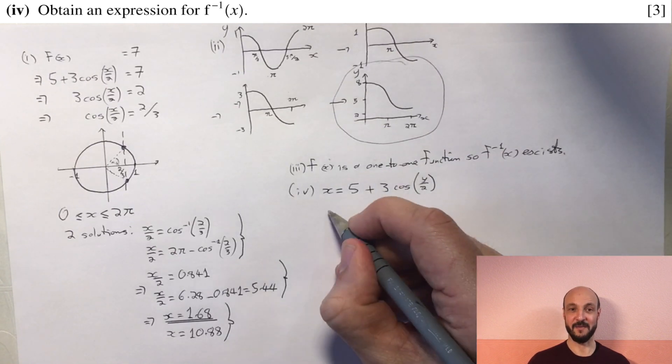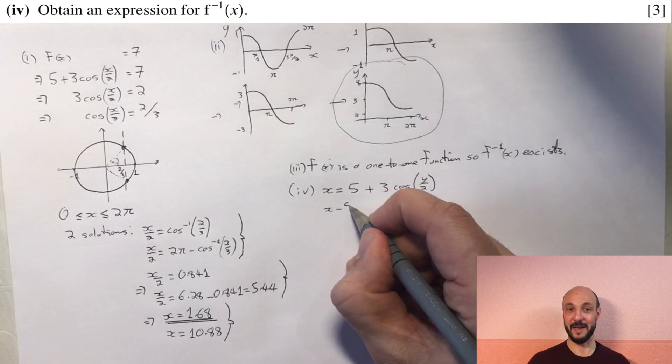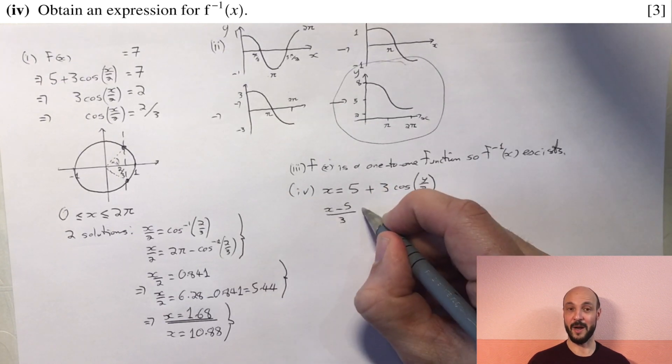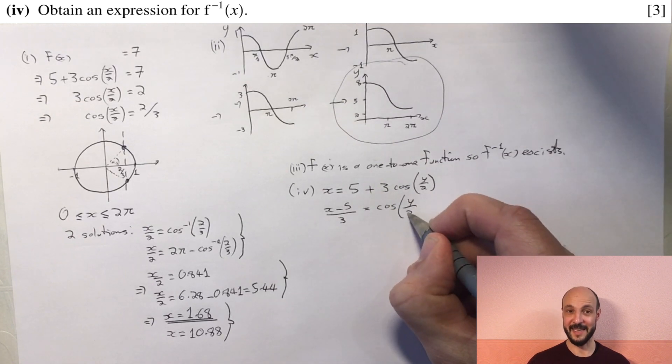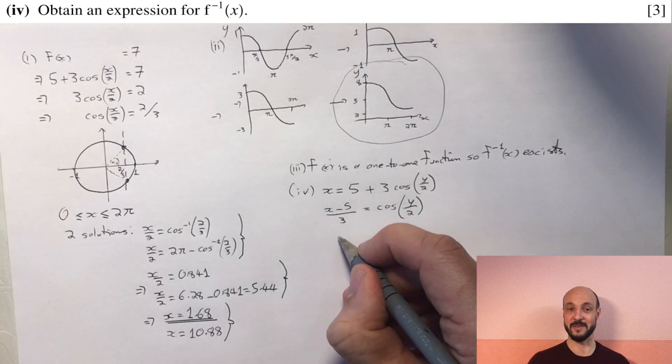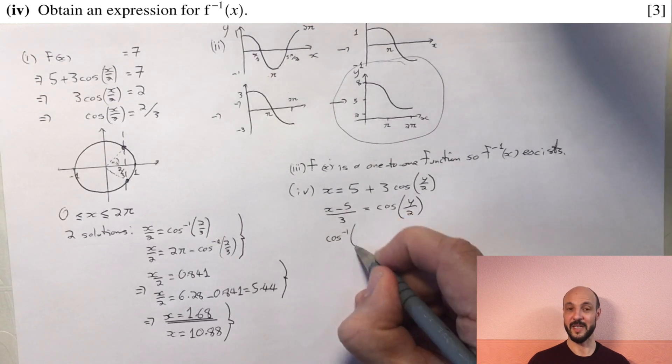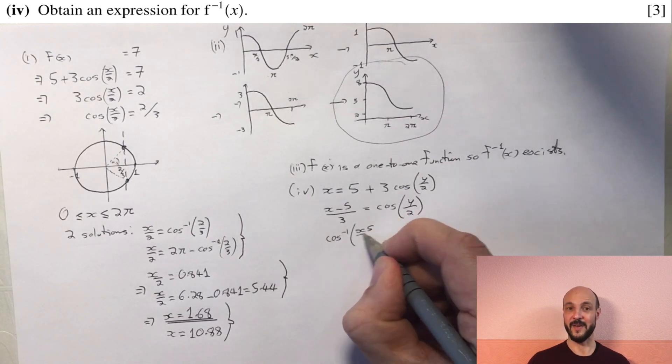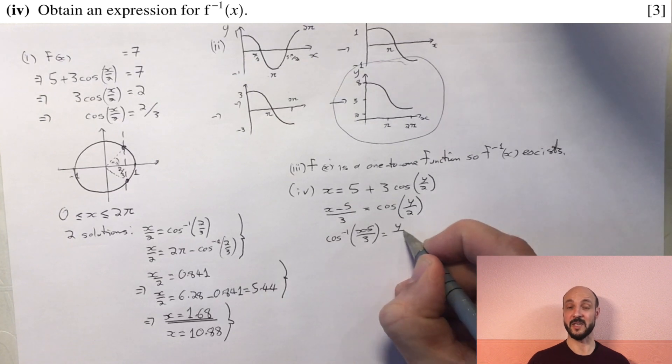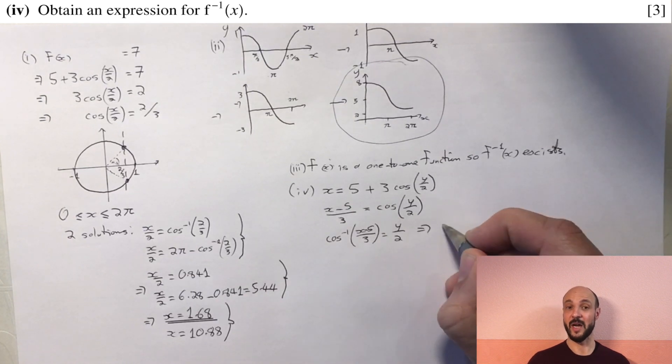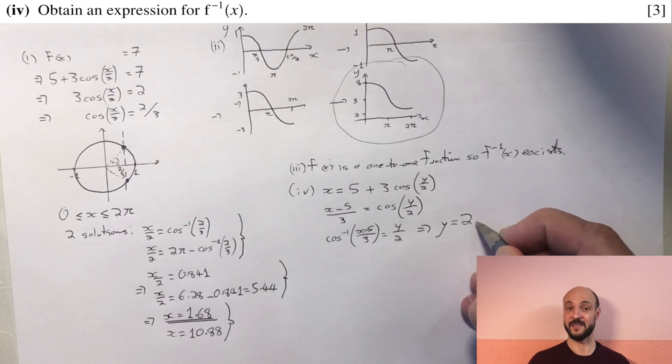So we rewrite the equation as x equals 5 plus 3 cosine of y over 2. We then subtract our 5 and divide it through by 3 to give cosine of y over 2 equals x minus 5 over 3. We then take the inverse cosine of both sides to give us y over 2 equals arc cosine of x minus 5 over 3. And then we multiply both sides by 2 to give y equals 2 arc cosine of x minus 5 over 3.